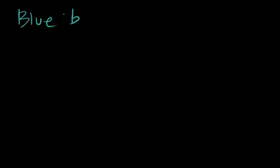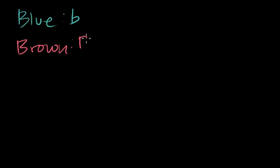I've already started with the eye color example, so I figure no harm in continuing it. Let's say we live on a planet, or we're a species, where there's only two possible eye colors: either blue — the allele for blue I'll abbreviate with a lowercase b — or you could have brown eyes, which we'll do with uppercase B.